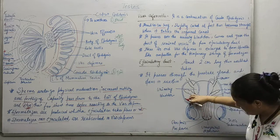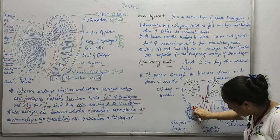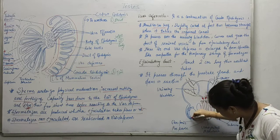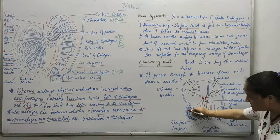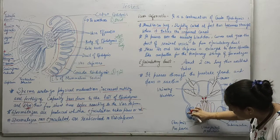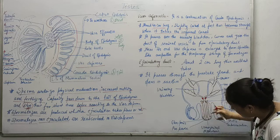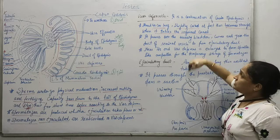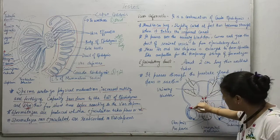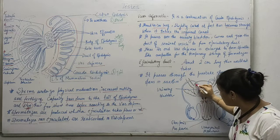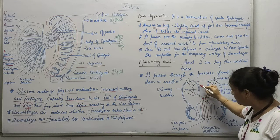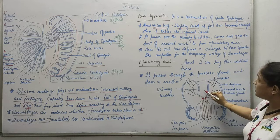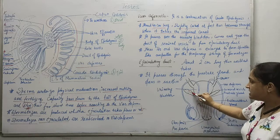You can see this is the inguinal canal. Here is the testis, and there is the epididymis. The epididymis leads to the tubular structure known as the vas deferens. You can see that the vas deferens enters the inguinal zone — this is the inguinal area. It then passes over the urinary bladder. Here you can see the urinary bladder, and the vas deferens moves in this path, curving around.